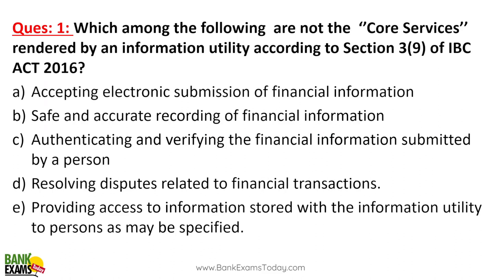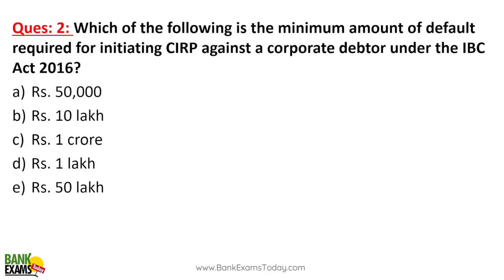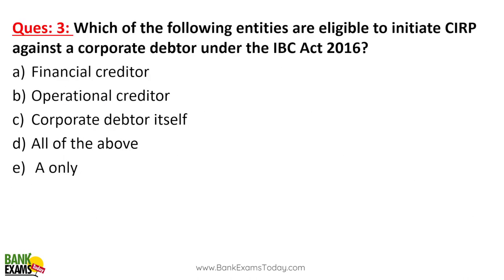Under IBC, which of the following are not core services rendered by an information utility? Resolving disputes is not a service provided by an information utility — it is an information utility, so resolving disputes is not its job. Which is the minimum amount of default required for initiating CIRP (Corporate Insolvency Resolution Process)? Entities eligible to initiate CIRP are: financial creditor, operational creditor, or the corporate debtor itself.